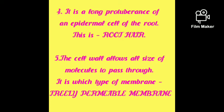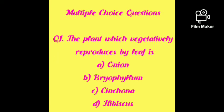Number five: the cell wall allows all sizes of molecules to pass through it — it is a freely permeable membrane. Now let's see some multiple choice questions. The plant which vegetatively reproduces by leaf is: onion, bryophyllum, cinchona, or hibiscus?